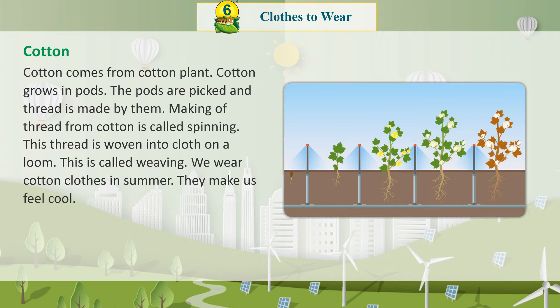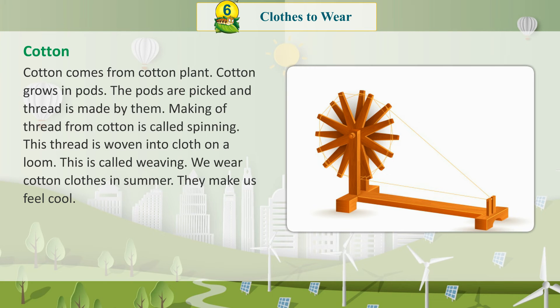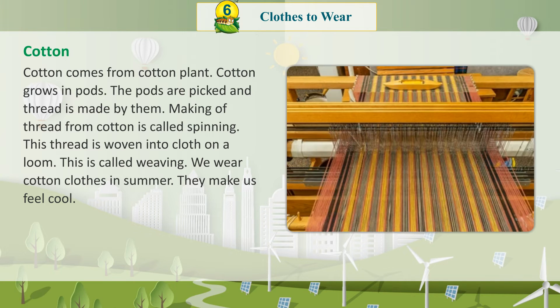Cotton grows in pods. The pods are picked and thread is made from them. Making thread from cotton is called Spinning. This thread is woven into clothes on a loom. This is called Weaving.